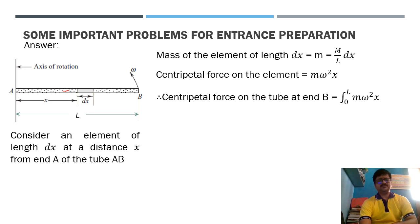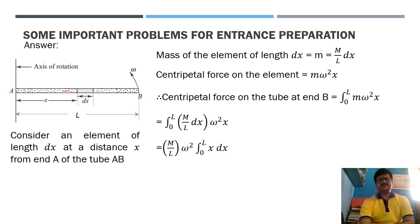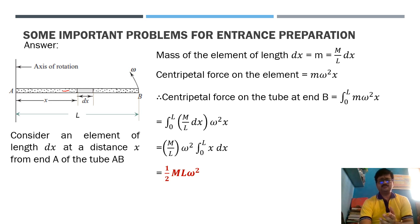The total force at end B is found by integrating the centripetal force expression from x equals 0 to x equals l. Substituting the element mass as (m/l) dx and r as x, the integral becomes (m/l) omega squared times the integral of x dx from 0 to l. Evaluating gives x squared over 2, and substituting limits yields the answer as one-half m l omega squared. The answer is option C.